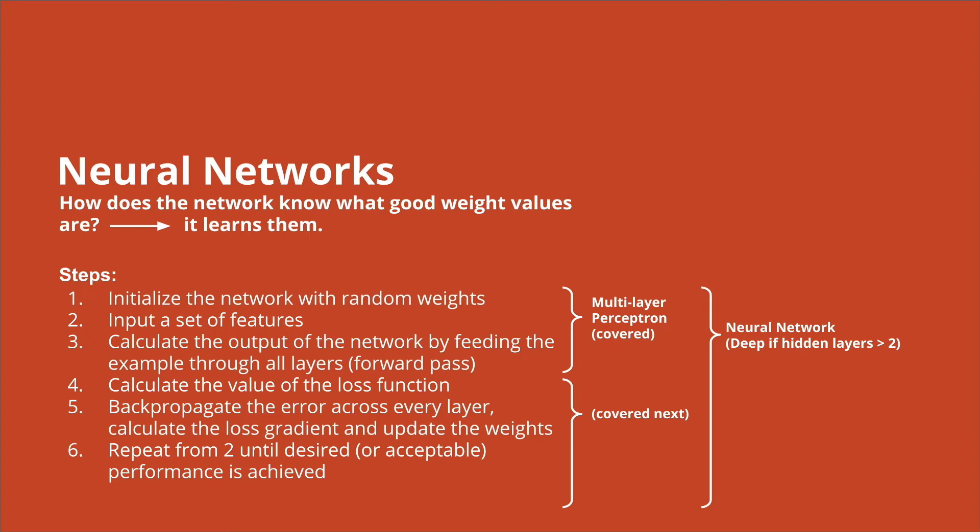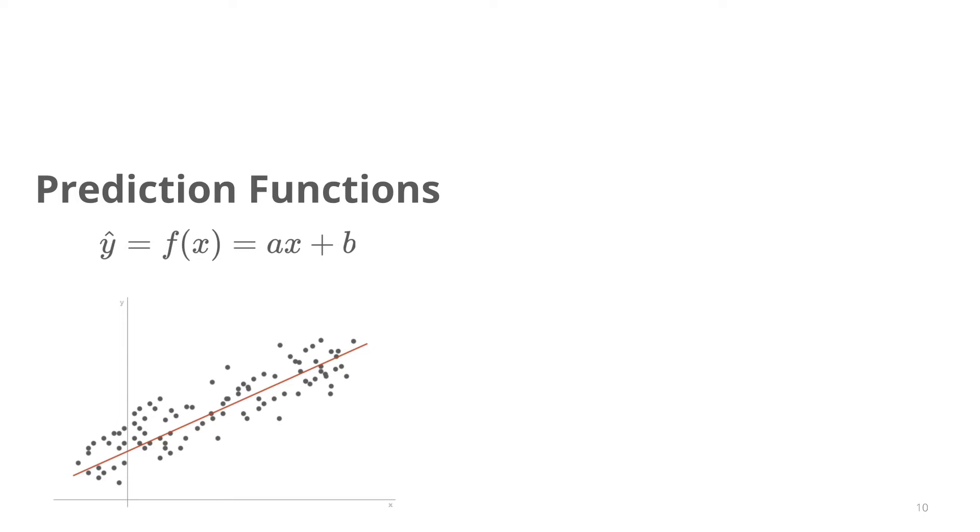We redo this from bullet point number two until we achieve a desired or acceptable performance of the network. So in order to make some of these concepts even more clear, I would like to show you the most simple prediction function that we have and how we can optimize its loss function. Here you can see a simple linear regression model, where we have a slope parameter A and an intercept parameter B.